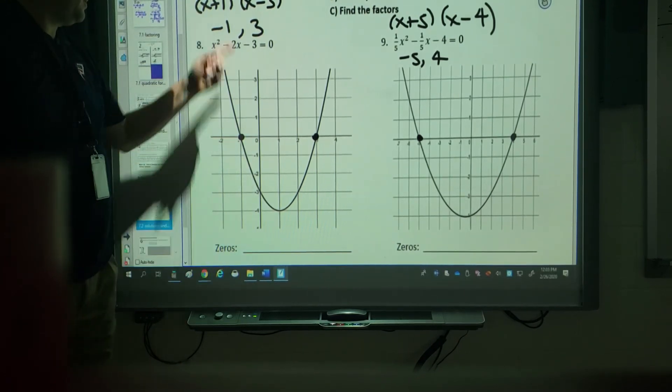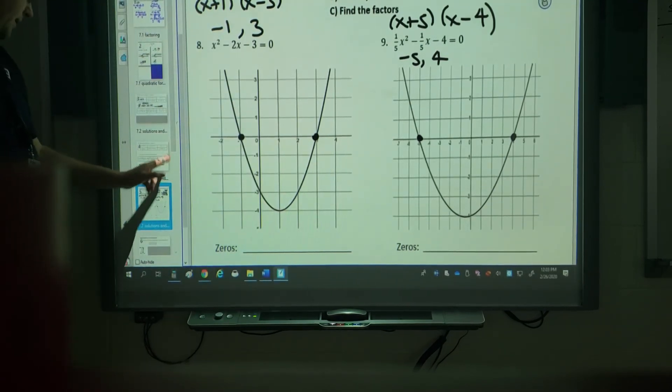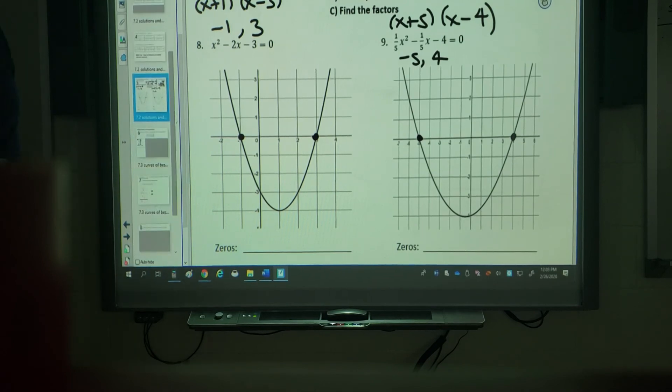And at the bottom where it says zeros, I guess technically that's where I was supposed to fill in that space. I just didn't notice that at the time. And it actually covers 7.2 on factors, roots, zeros, and solutions. But you will be tested with that on 7.1 at the same time.